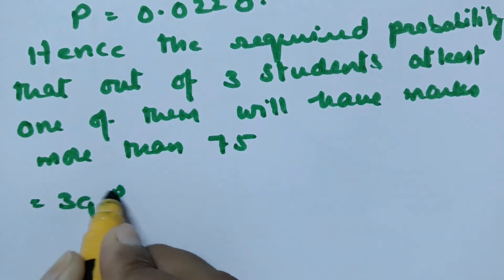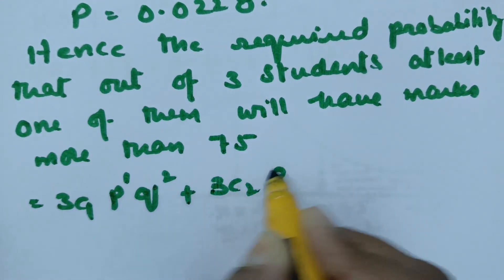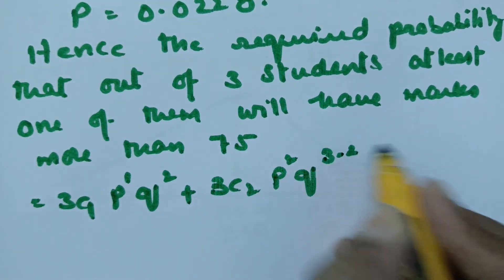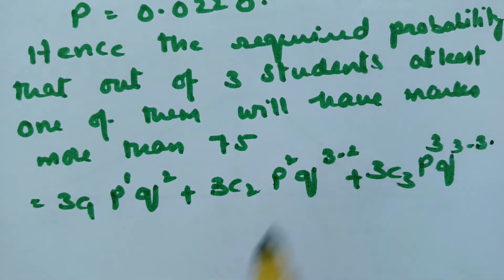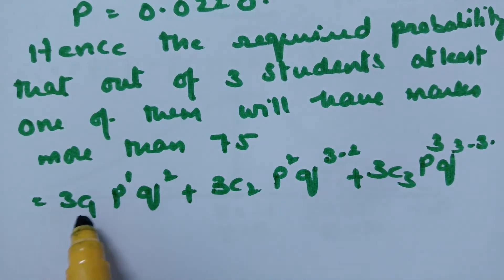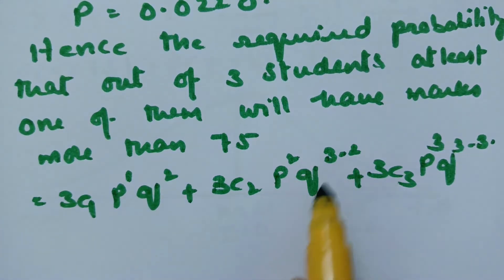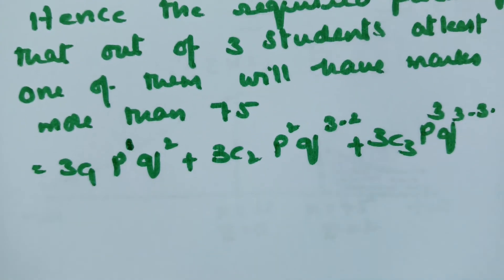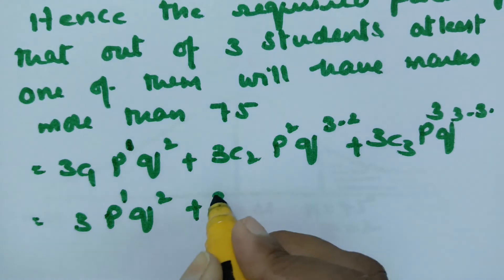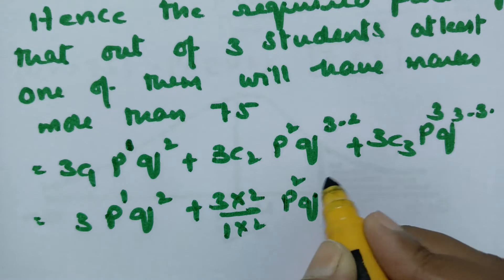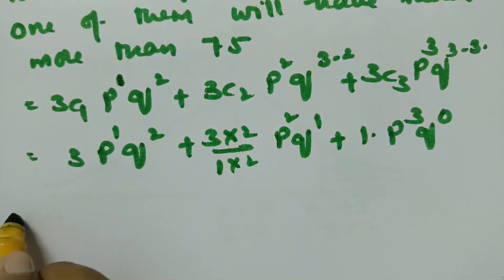For 'at least one', we expand from r = 1 to r = 3: 3C1 * p^1 * q^2 + 3C2 * p^2 * q^1 + 3C3 * p^3 * q^0. Evaluating the coefficients: 3C1 = 3, 3C2 = 3, 3C3 = 1. So the expression is 3p*q^2 + 3p^2*q + p^3.